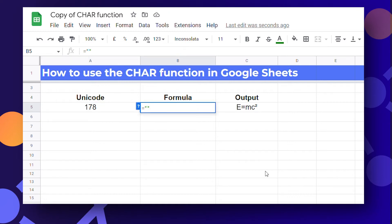The normal characters will be enclosed by a pair of quotation marks and followed by ampersand symbol. And then enter the char function with the code number. This will return the equation in the desired format.